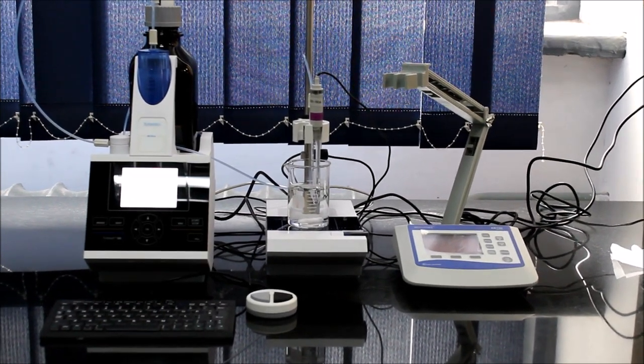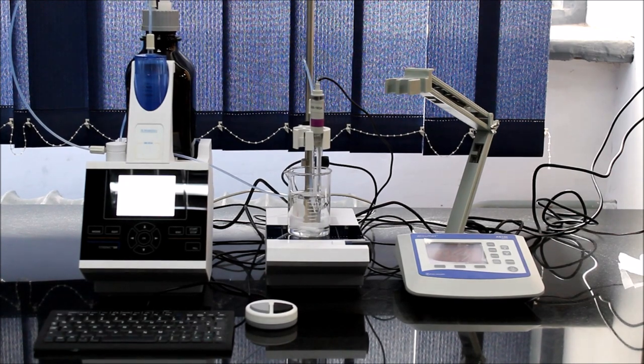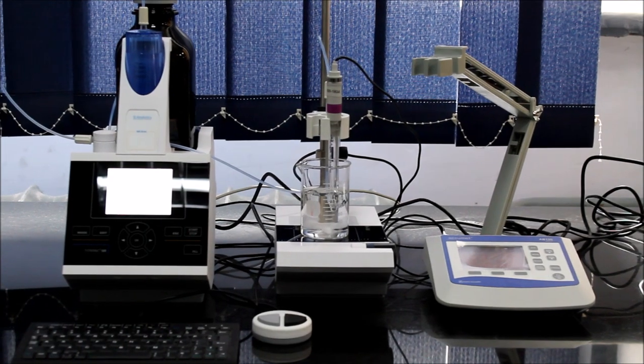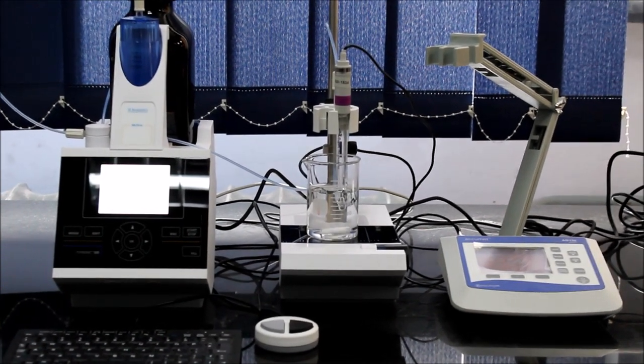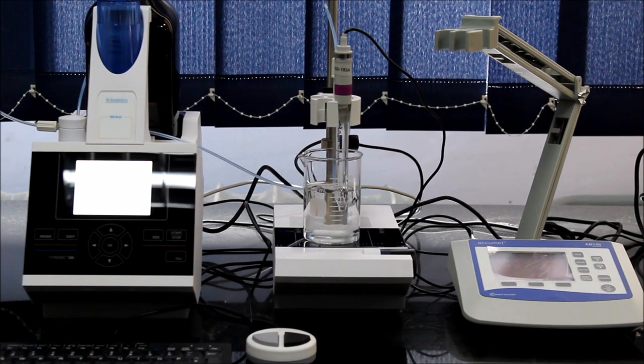This is an experiment set for our titration lab which consists of an autotitrator located on the left and the pH meter on the right. This type of set is ideal for titration experiments that require high accuracy and involve many samples.